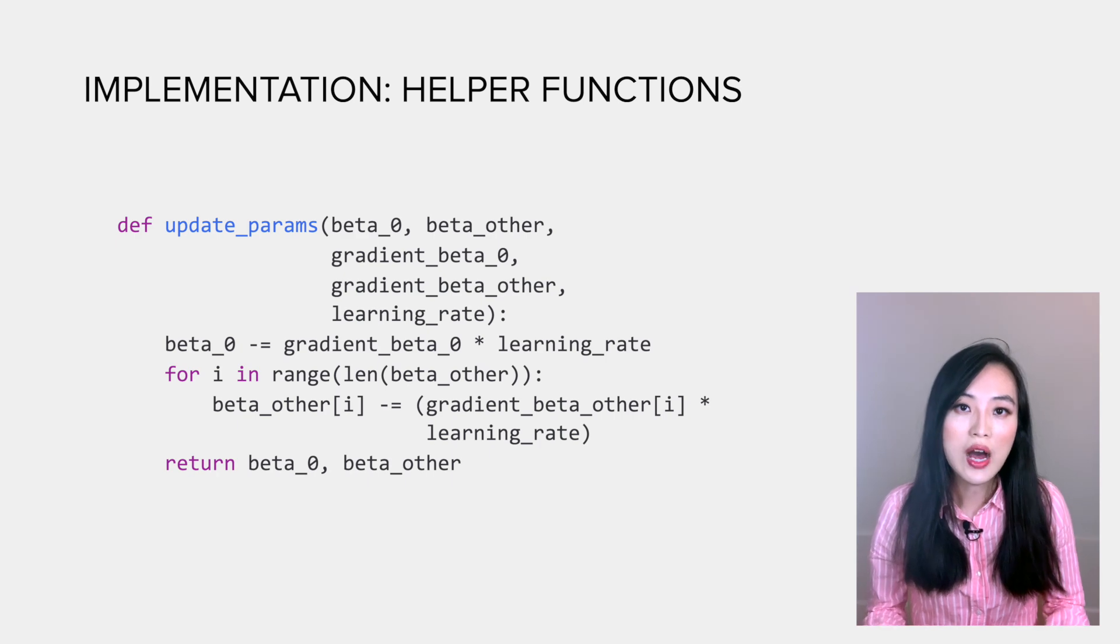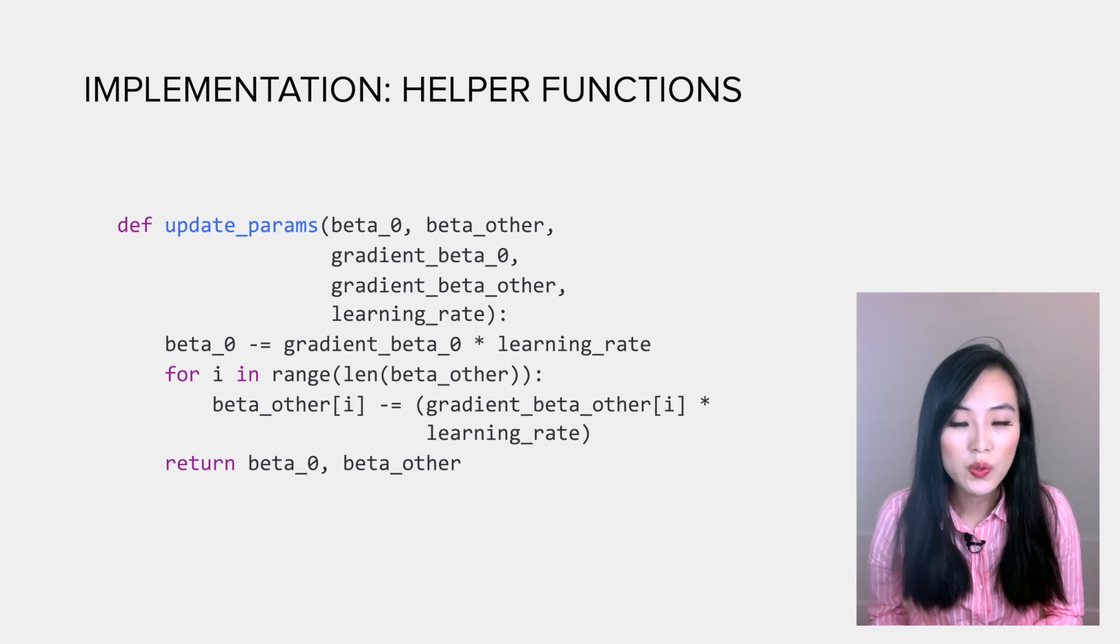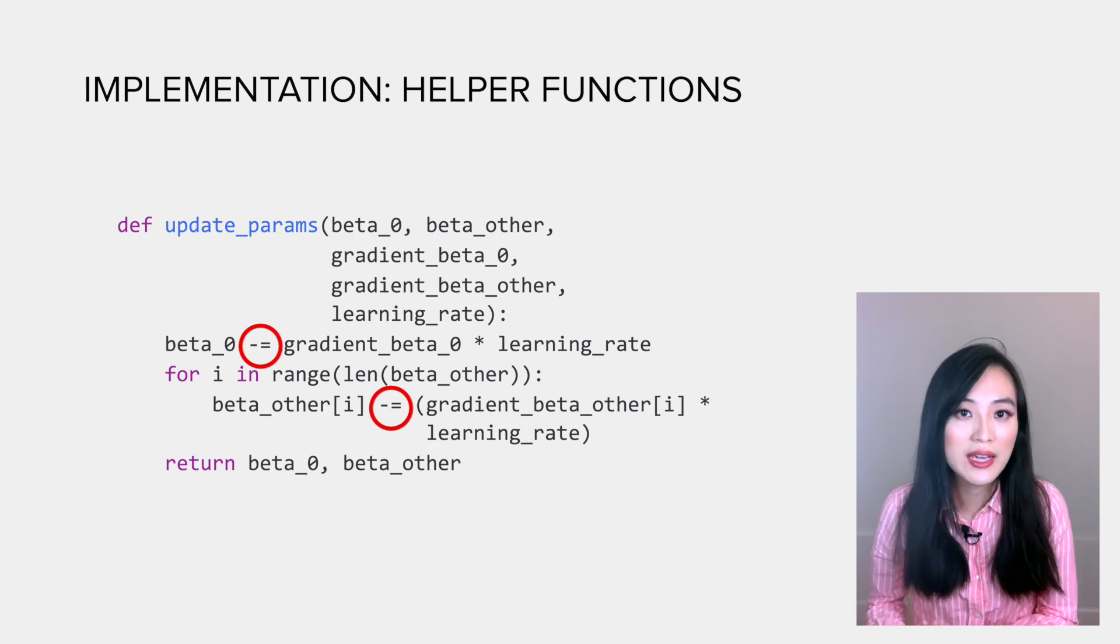The last helper function is to update the values of betas based on the gradients we have obtained. One thing I'd like you to pay attention to is the sign when we apply the changes to betas.